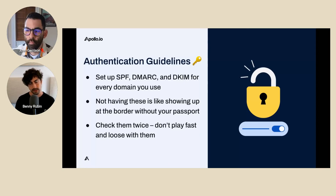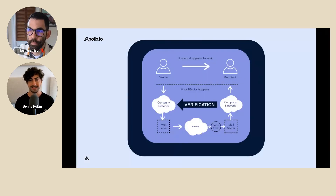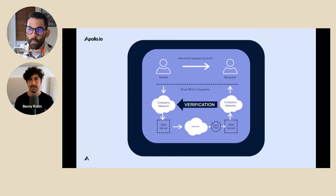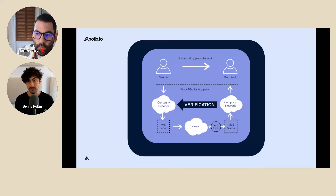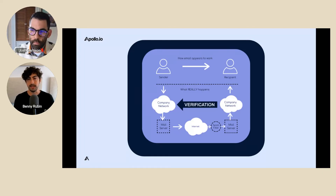The border guard only lets you through if your passport is valid. They look at your face, confirm it with your passport, then check a database to see if anything's amiss. There is a similar process for an email server. It looks at where the email came from, confirms there isn't any obvious reason to reject it — i.e., it doesn't look like you're spamming, spoofing, or scamming — then asks the sending server if anything is amiss. If you don't supply your ID, or your sending server doesn't confirm your ID, you probably aren't getting through.